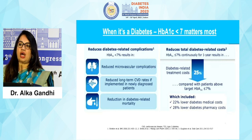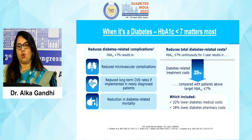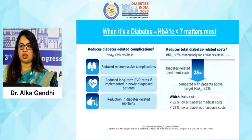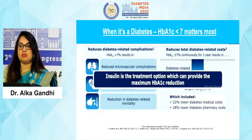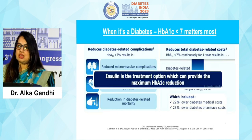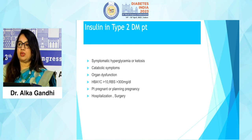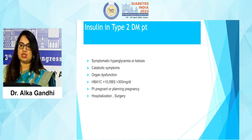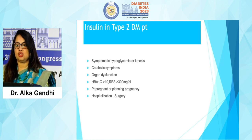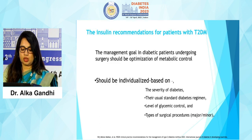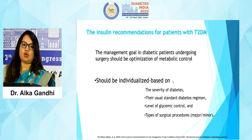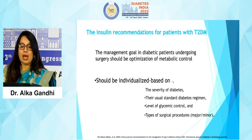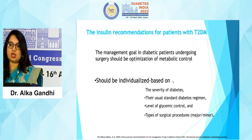We have a good armamentarium of drugs available in the last two decades, but old is gold and there is no agent as efficient as insulin. Insulin provides maximum A1c reduction and is the drug of choice in these cases. In type 2 diabetes, we start insulin in patients with symptomatic hyperglycemia, ketosis, catabolic symptoms, organ dysfunction, A1c more than 10 or RBS more than 300, pregnancy, hospitalization, or surgery. Management goal in hospitalized or surgical patients is optimization of metabolic control, individualized based on severity of diabetes, glycemic control, and type of surgical procedure.